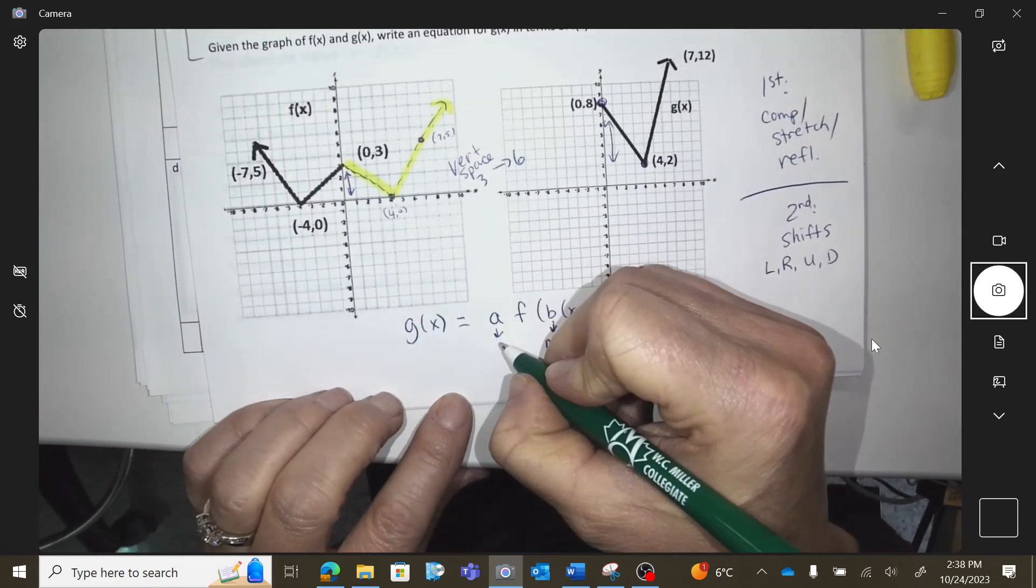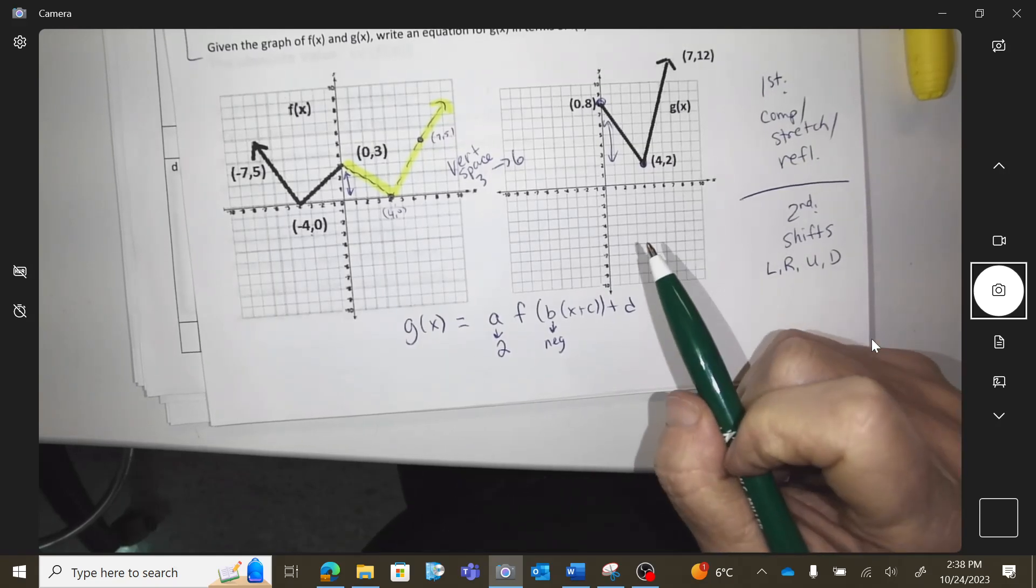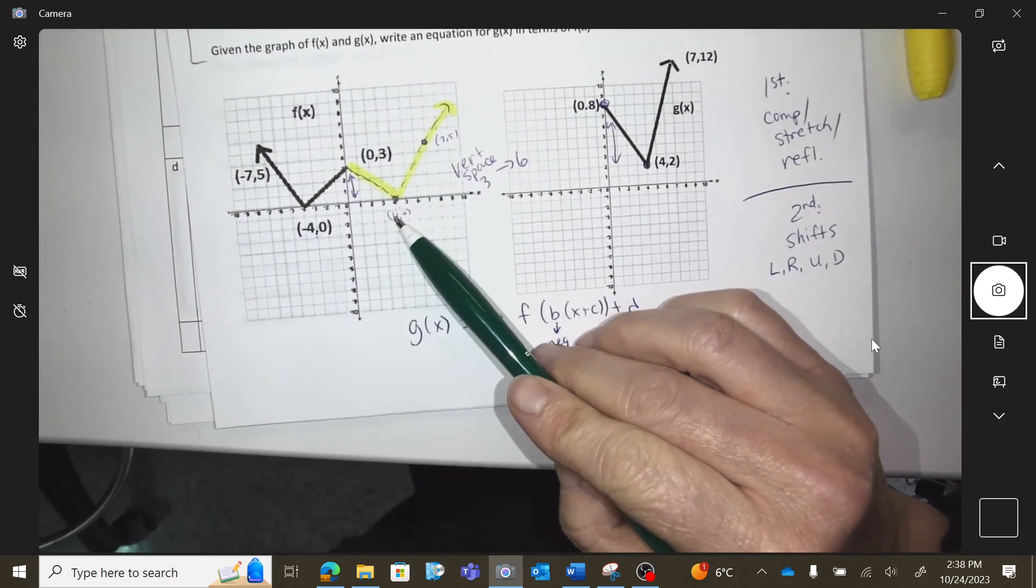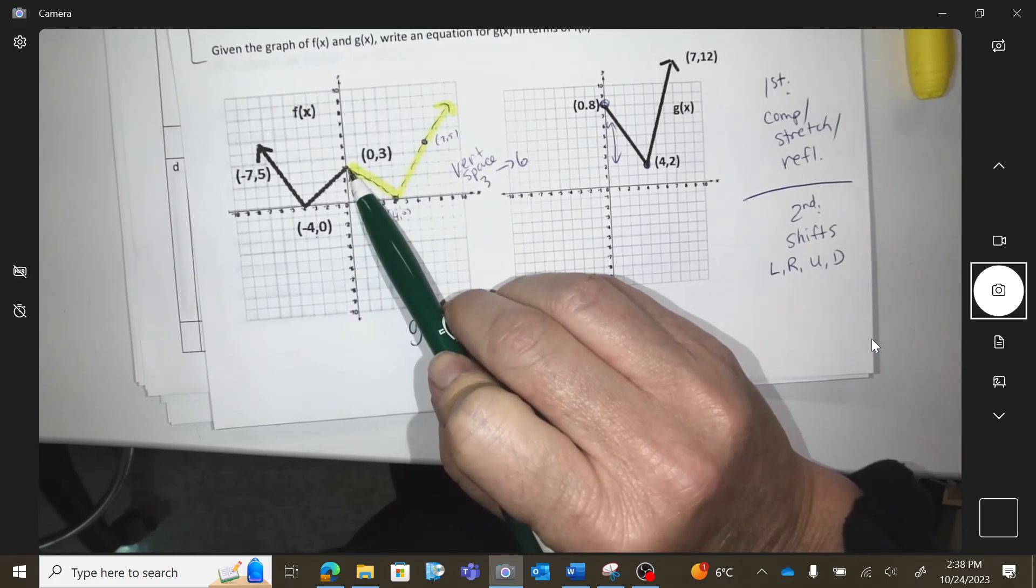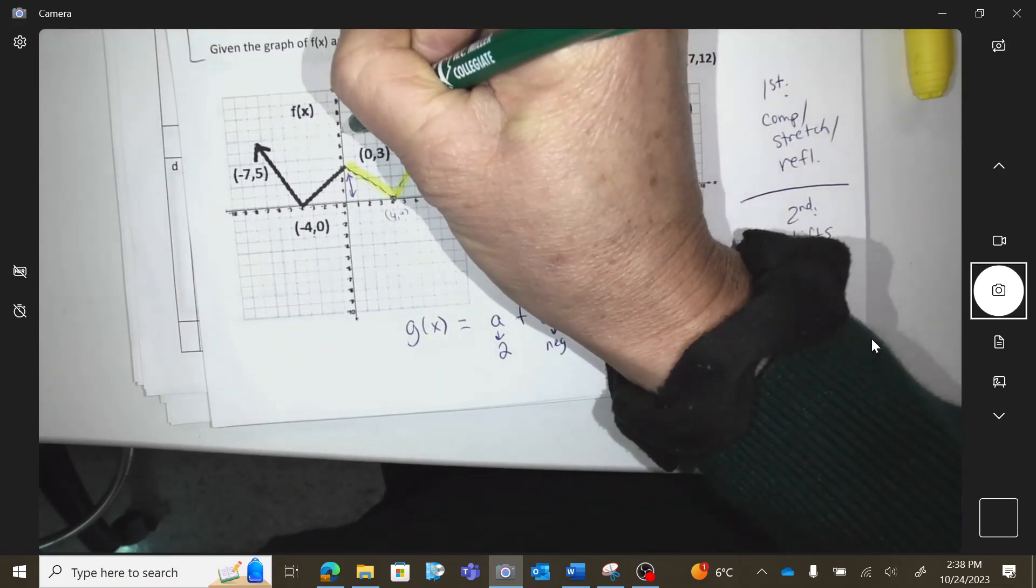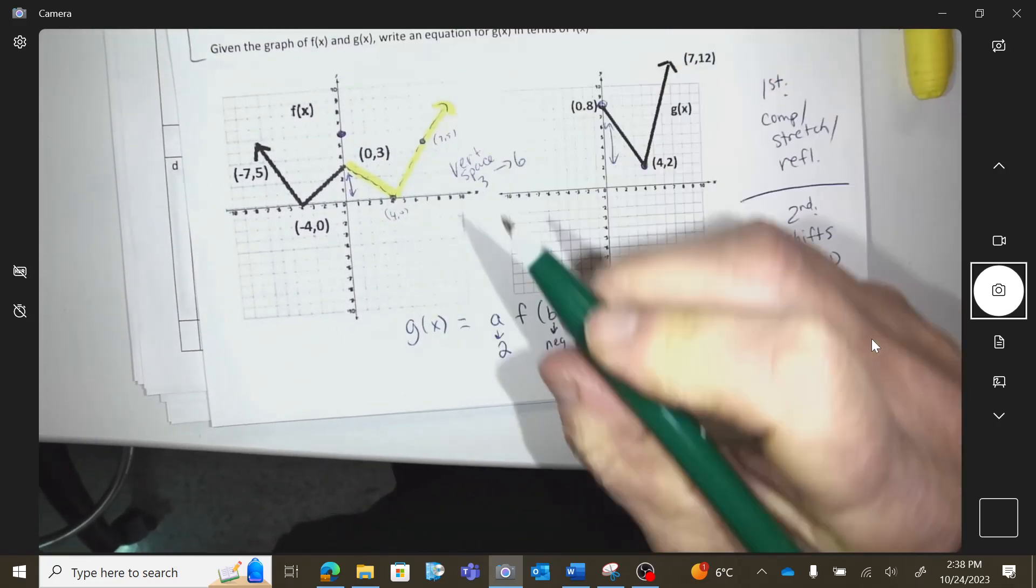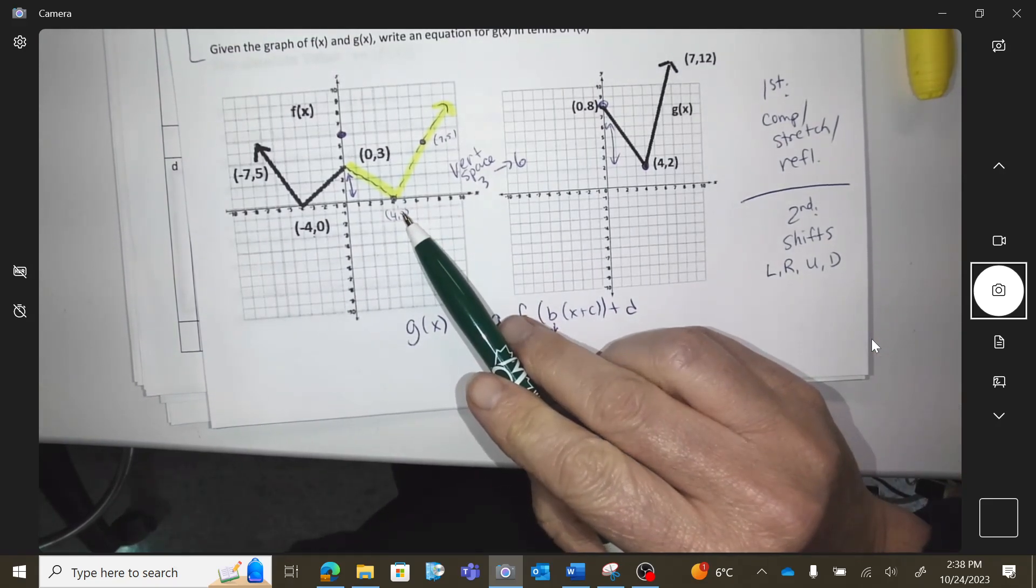So vertical space was three and now it's six, so what happened to my graph? I did a vertical stretch by two. So that means I'm going to have an a of two. If I vertically stretched this yellow graph by two, zero three would move to zero six. Where would four comma zero go?